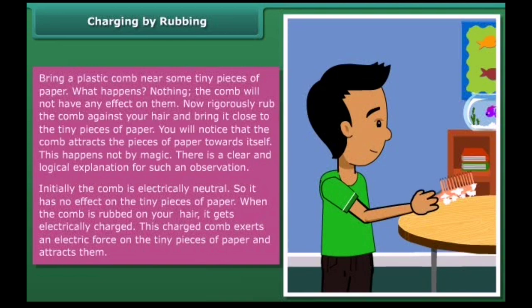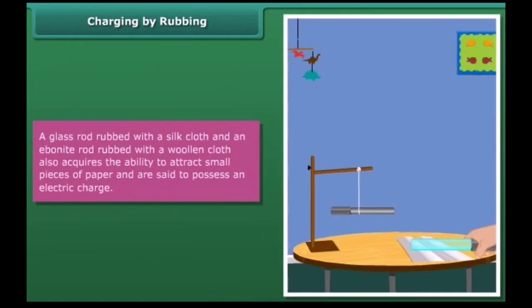When the comb is rubbed on your hair, it gets electrically charged. This charged comb exerts an electric force on the tiny pieces of paper and attracts them. A glass rod rubbed with a silk cloth and an ebonite rod rubbed with a woolen cloth also acquire the ability to attract small pieces of paper and are said to possess an electric charge.